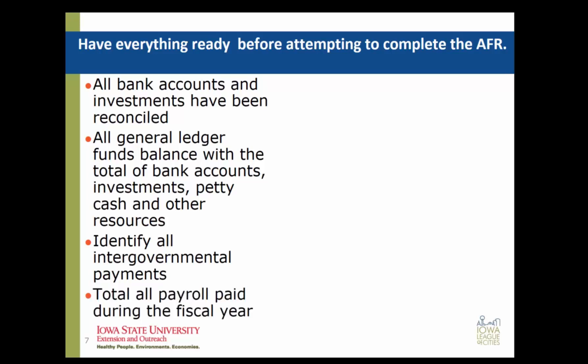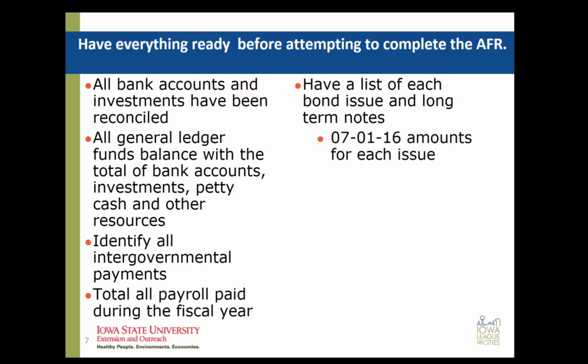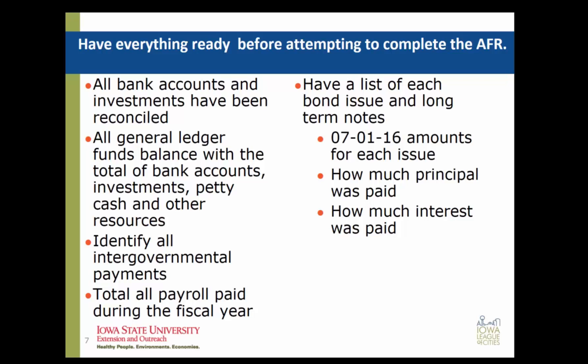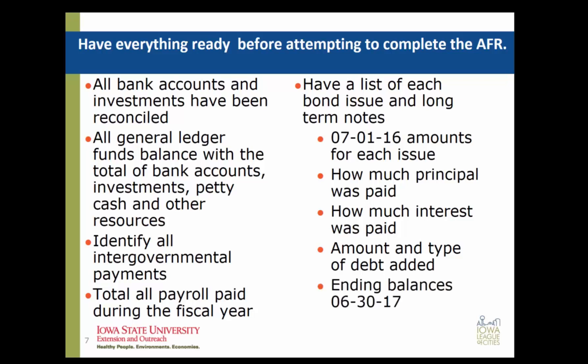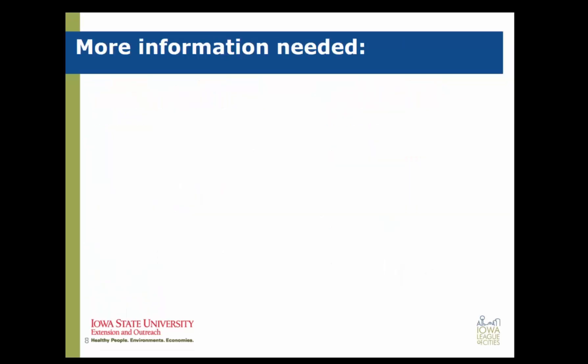You will need the total that you paid in payroll during the fiscal year. You may already have this if you publish your gross salaries on a fiscal year rather than calendar year basis. You will need a list of each of your bond issues and long-term notes, including the amount of each issue at the beginning of the fiscal year — July 1, 2016 — how much was paid in principal and interest for each note, the amount and type of any debt added during the fiscal year, and the ending balances of any bonds or notes as of June 30, 2017. All of this information may be found on your outstanding debt report, which is due August 31st.